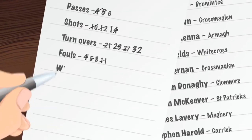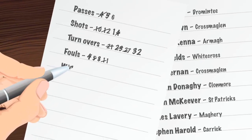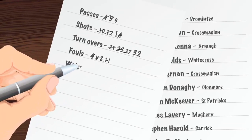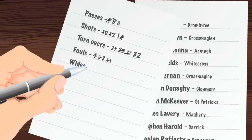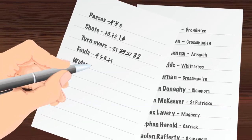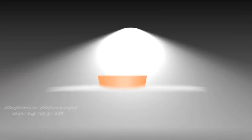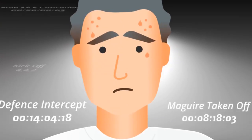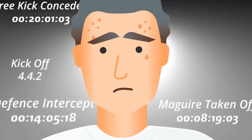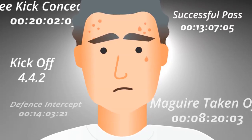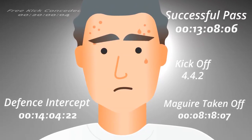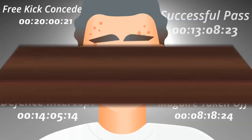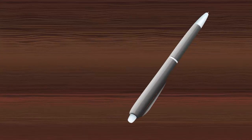Remember the good old-fashioned pen and paper approach to performance analysis? When you try to frantically write everything down, and the times you try to remember more than 30% of what really happened in the game? Now, it's time to move on.